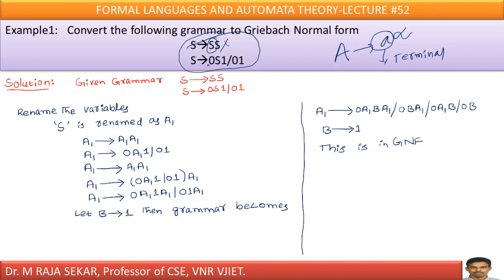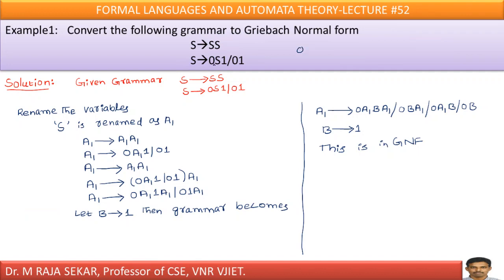Therefore it is not in Greibach Normal Form. First, you must identify which symbols are terminals. Here, 0 is a terminal because there is no production for 0. And 1 is also a terminal. So these two symbols — 0 and 1 — are terminals. Capital S is a non-terminal, as it is producing something.